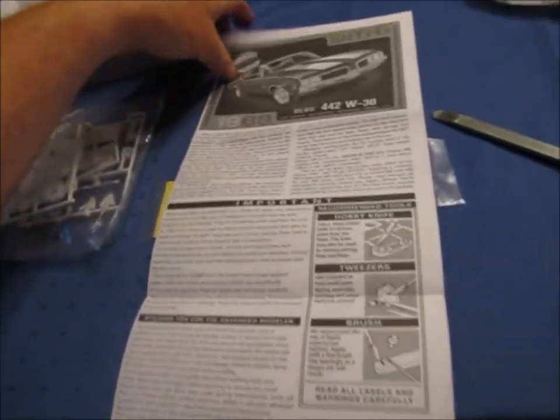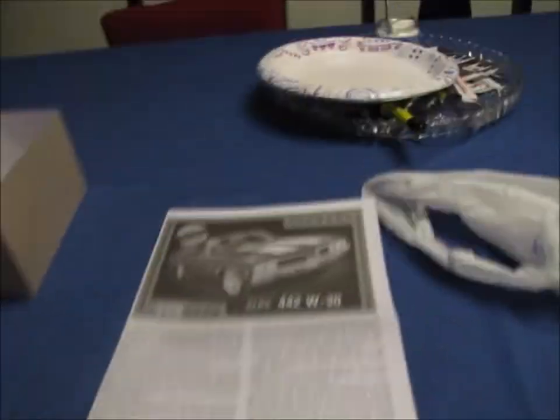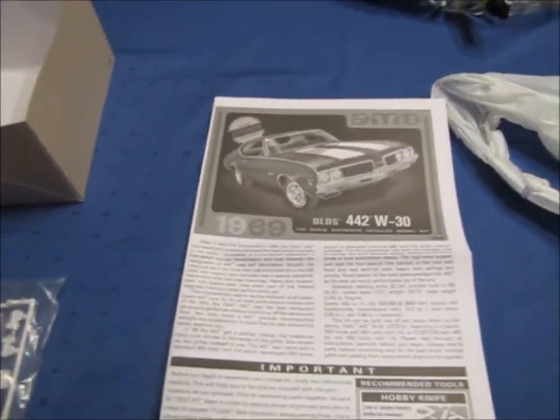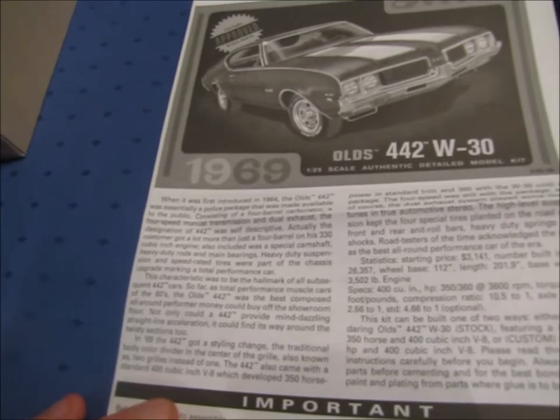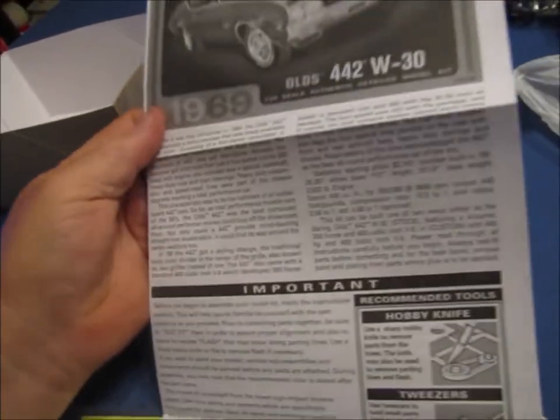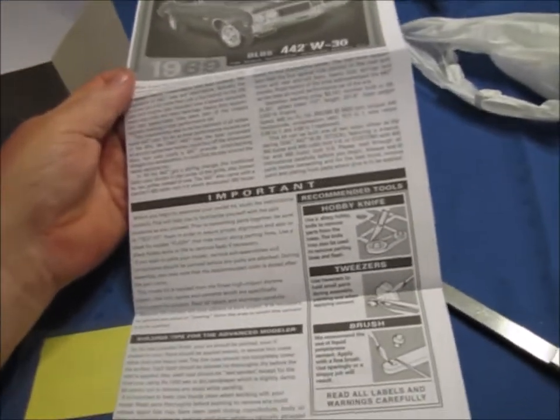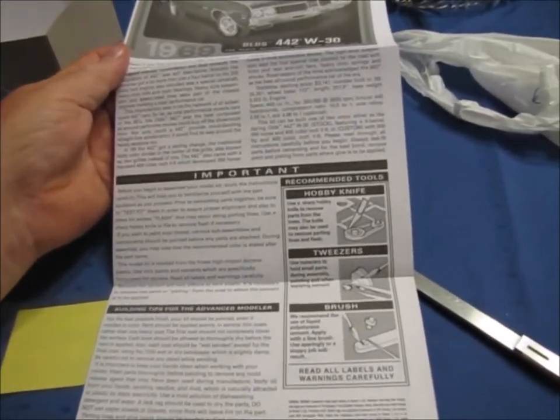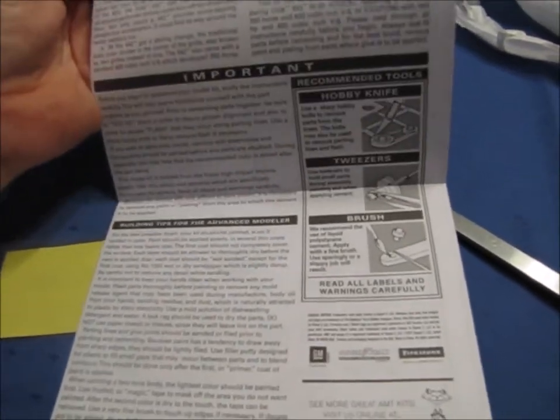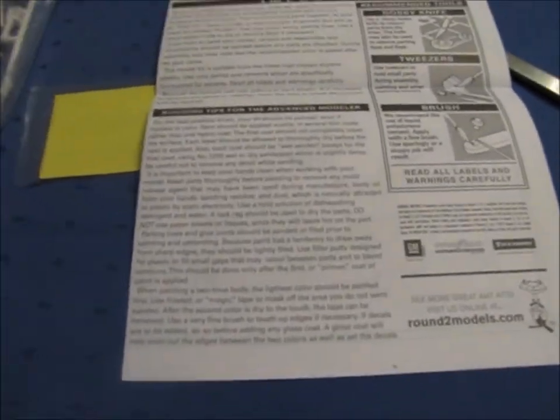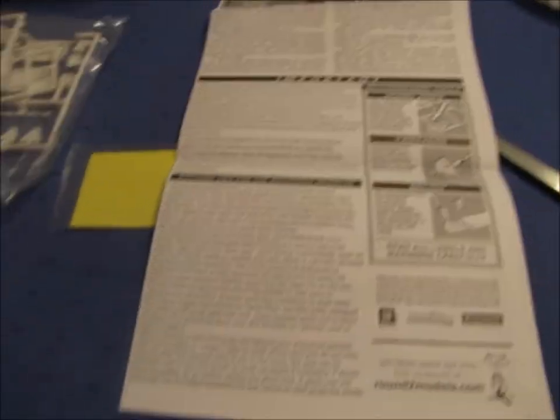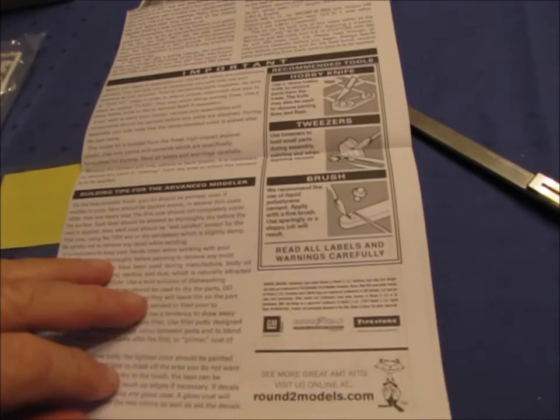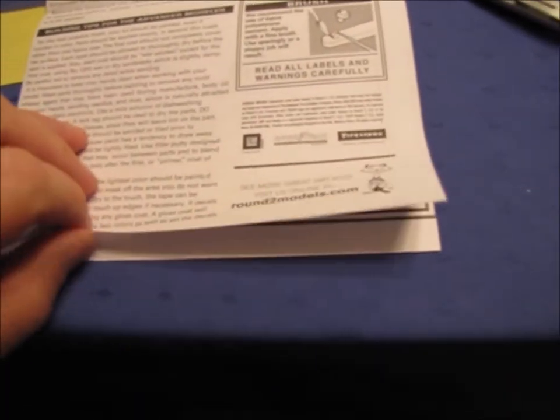Let's go ahead and take a look at the instruction sheet. So, it's a rather big instruction sheet. Again, a picture of the box art. It talks about the history of the Oldsmobile 442. Some important information before beginning the assembly, building tips for the advanced modeler. Now some of you guys would probably laugh at some of these tips because this might be actually common knowledge. But, you know, round two models has always done a pretty good job with some of this.